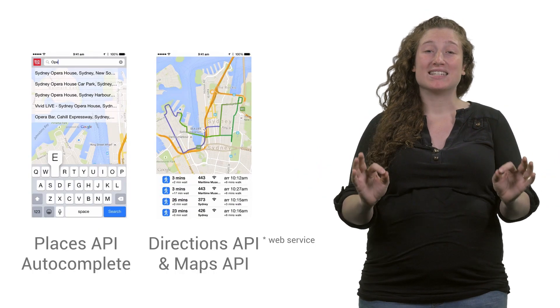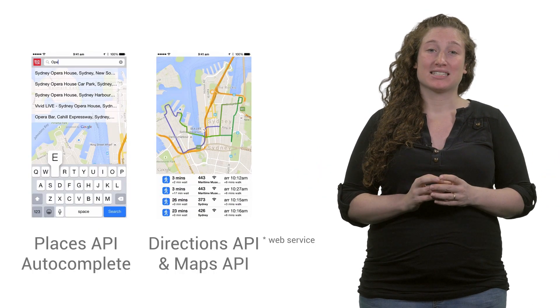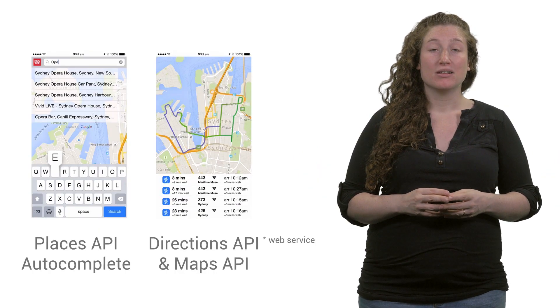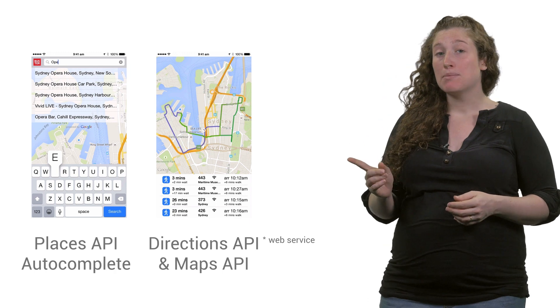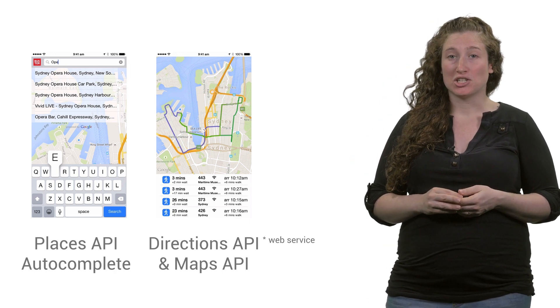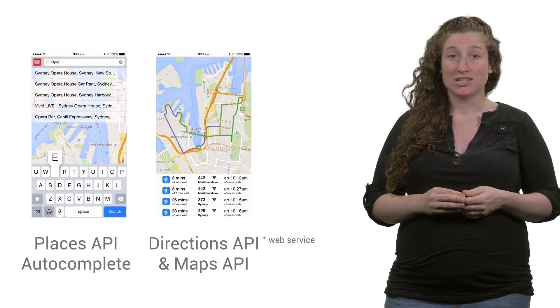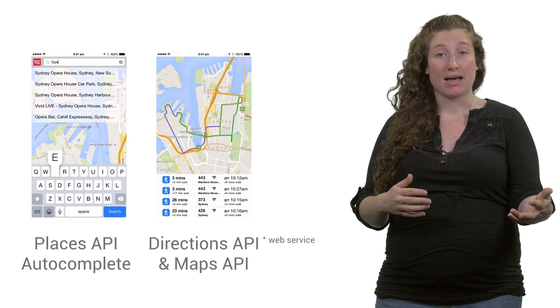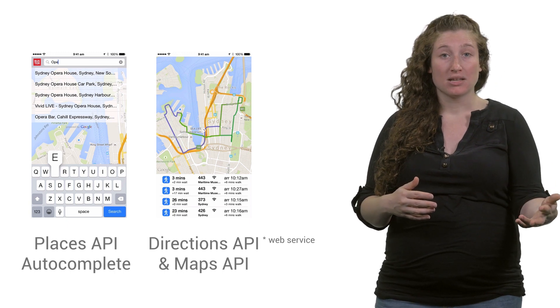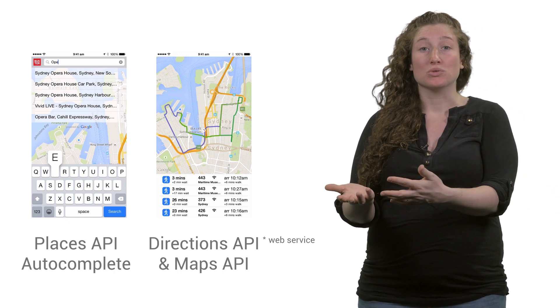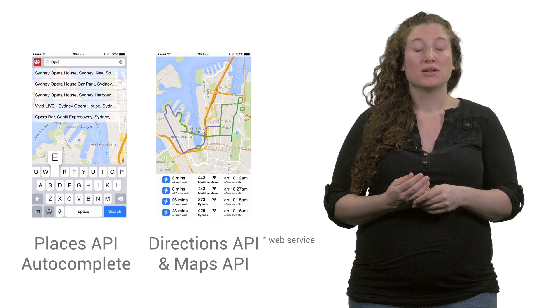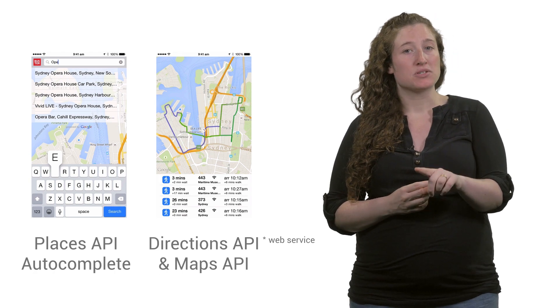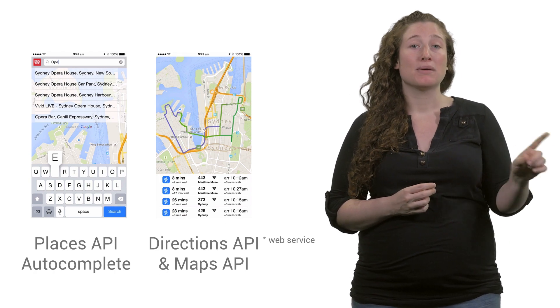This is a great example of connecting the API building blocks together: the Places API Autocomplete feature to get the information on the destination, the Directions API to get the bus schedule and the walking paths to the bus stops, and the Maps API to actually show the routes. Note that the Directions API is actually a web service — it's being called by my server and proxied to the client.